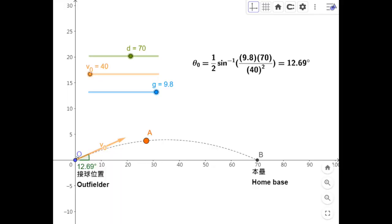Now let's see this formula in an actual scenario. Point O is the catcher. Point B is home base. Here I put the formula for the pitch angle with d, g, and v0 as the parameters. g is the gravitational field, roughly 9.8 meters per second squared.